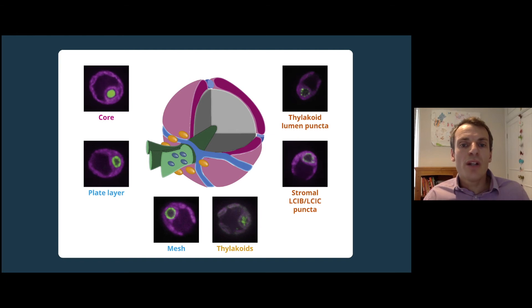Together with protein functional data, this allowed us to build a model of the pyrenoid and how it works. This includes the core where rubisco is fixing carbon dioxide, traversing the core of thylakoid membranes that deliver carbon dioxide at a high concentration to rubisco.